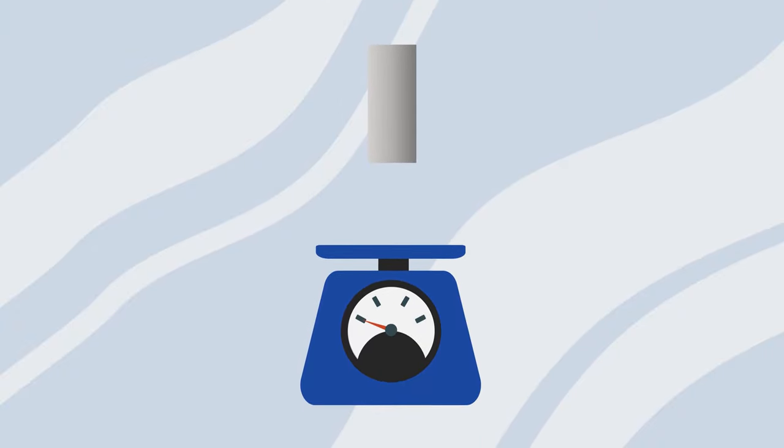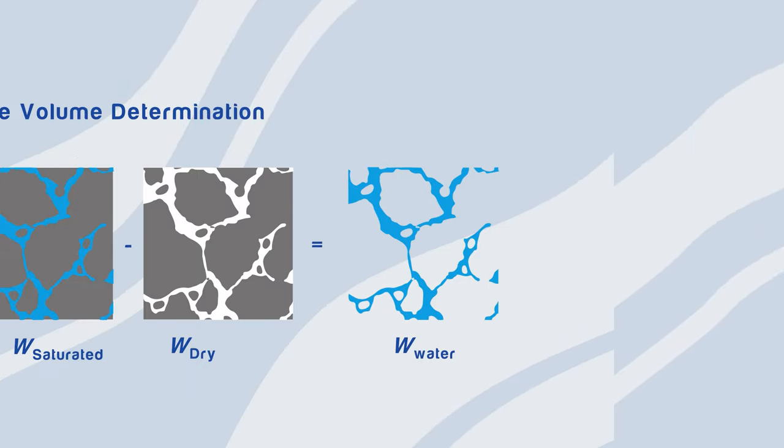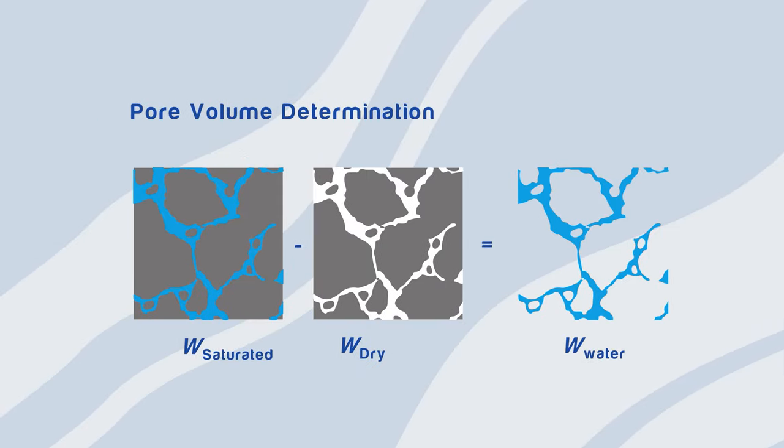We then weigh the core sample to find the saturated weight. If we now subtract the dry weight from the saturated weight, we obtain the weight of the water in the pore spaces.